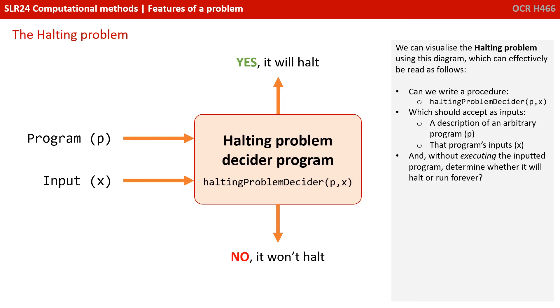We can visualize the halting problem using this diagram, which can effectively be read as follows: Can we write a procedure, let's call it Halting Problem Decider, which should accept as inputs two parameters—the first is a description of an arbitrary program (we can call that P), and the second is the program's inputs (we'll call that X)—and without executing the inputted program, determine whether it will halt or run forever?